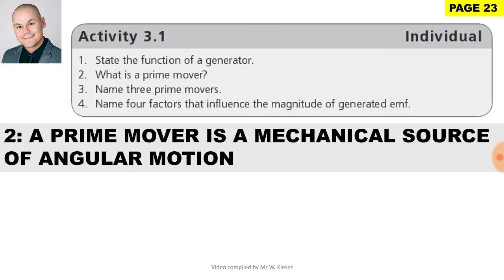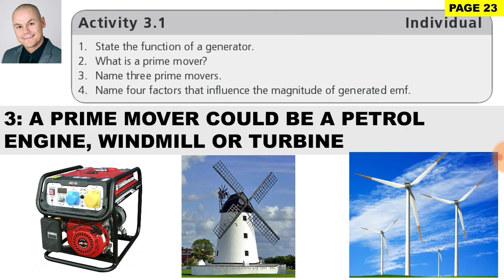Question 2: A prime mover is a mechanical source of angular motion. Question 3: Name three prime movers. We get a petrol engine, a windmill, and a turbine.